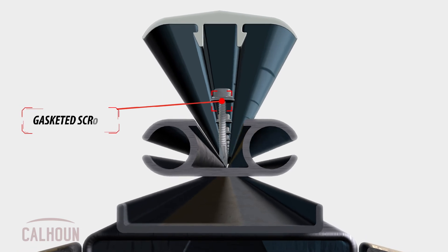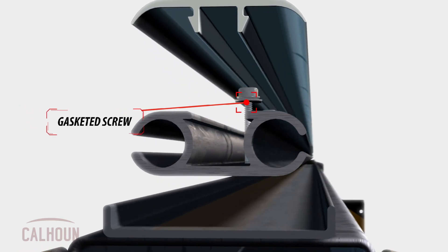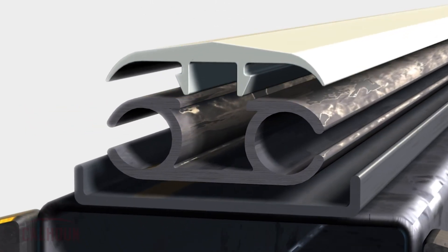The second thing we do is we use a gasketed screw to actually attach that aluminum extrusion through the rubber gasket and into the truss.